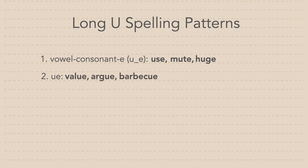The third spelling pattern is E-W. Words with this pattern include nephew, view, and curfew, as well as barbecue.